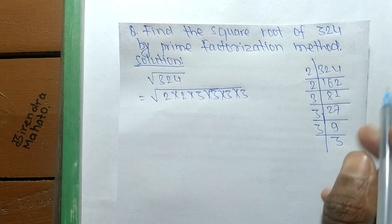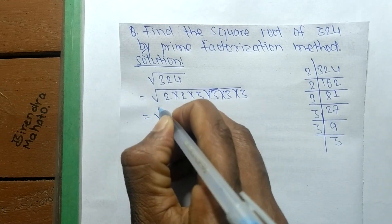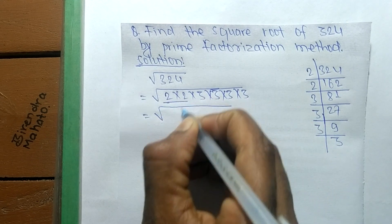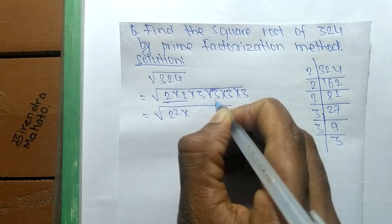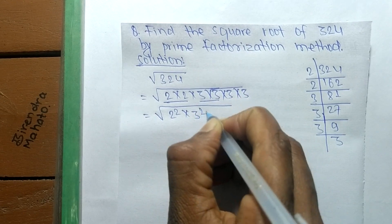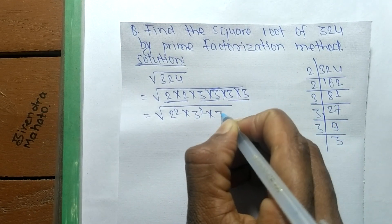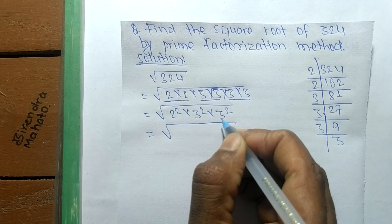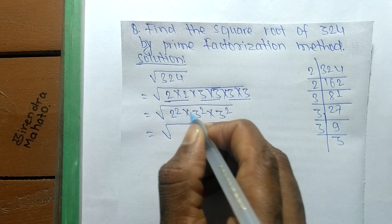We make squares from these prime factors: 2 × 2 is 2², 3 × 3 is 3², and 3 × 3 is 3². After making squares, we see that square is present in all these numbers.